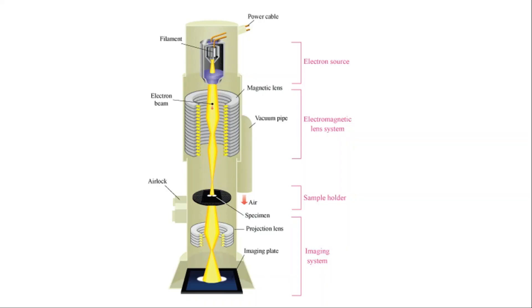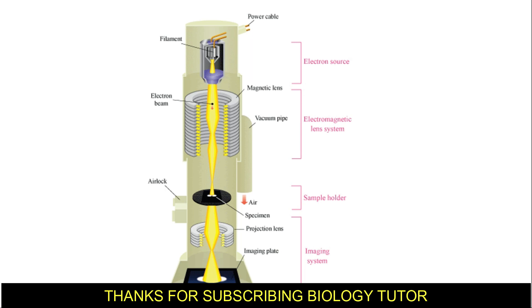This is the transmission electron microscope diagram. You can see the electron source, electromagnetic lens system, sample holder, and imaging system incorporated in this diagram.